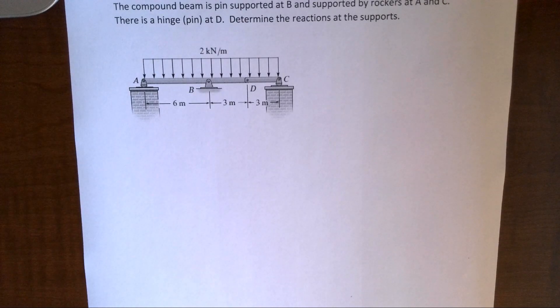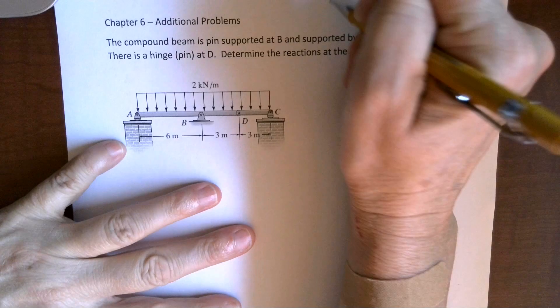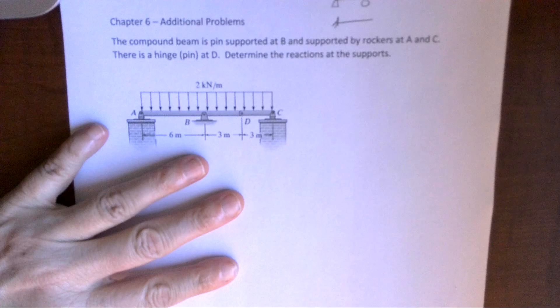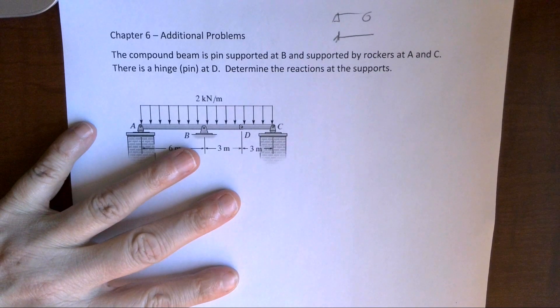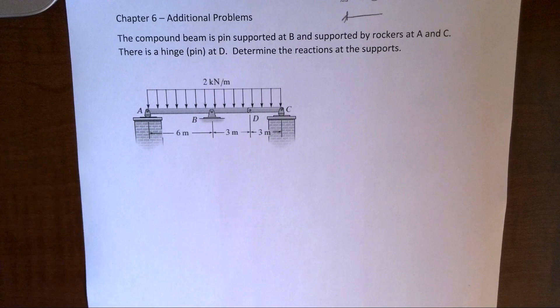My suggestion is either print out the problem statements and try to work it on your own or at least get it set up and then go back and watch the video and see how you did. We've been working with simply supported beams and cantilevers and we are going to be moving into compound. That's where we have an internal pin.